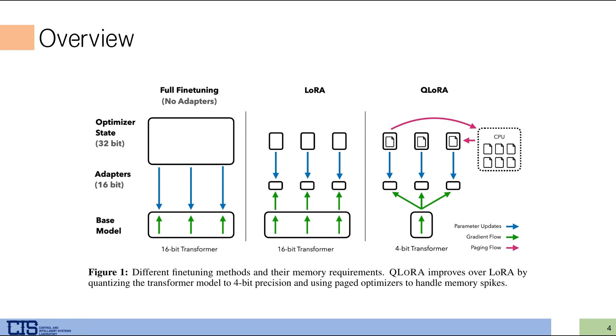Okay, then let's move on to the overview. Figure 1 in the QLoRA paper is a good overview of full fine-tuning, LoRA, and QLoRA. First, in full fine-tuning, all parameters of the pre-trained language model are fine-tuned to find the most optimal parameters. Because of this, as the number of parameters increases, the time required for fine-tuning also increases.